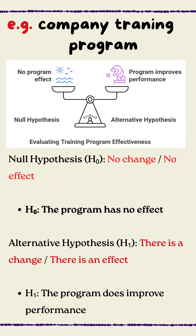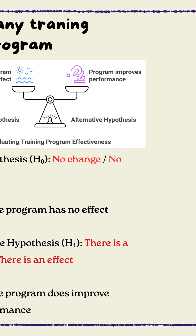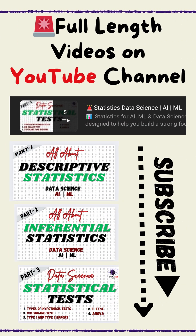Real-world case. Let's say a company launches a training program. The null hypothesis, H0, says the program has no effect. The alternative hypothesis, H1, says it does improve performance. Run your test, check the p-value, and make a data-driven decision.